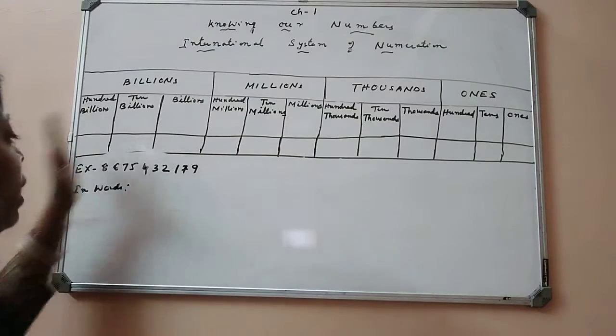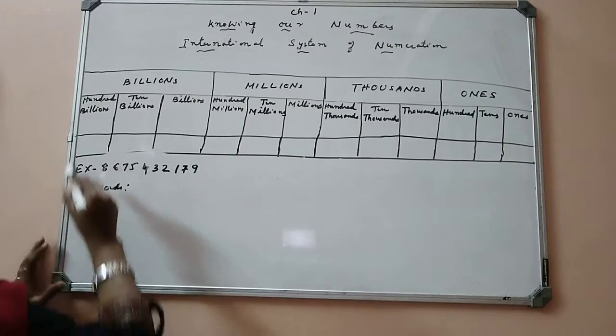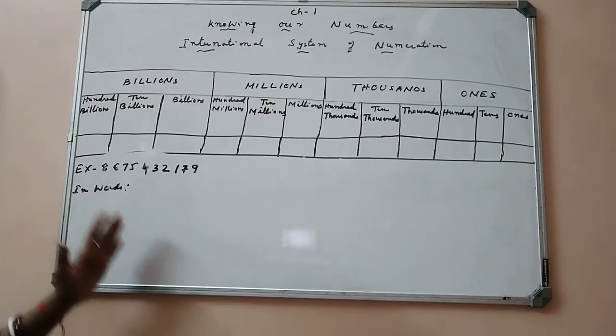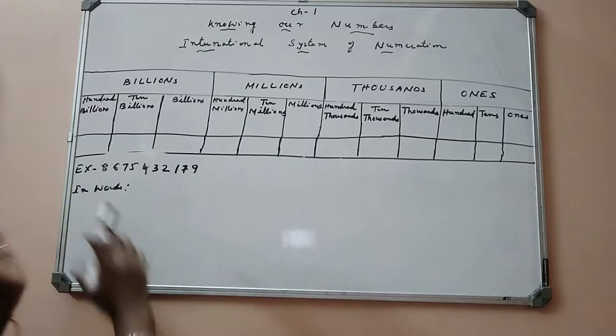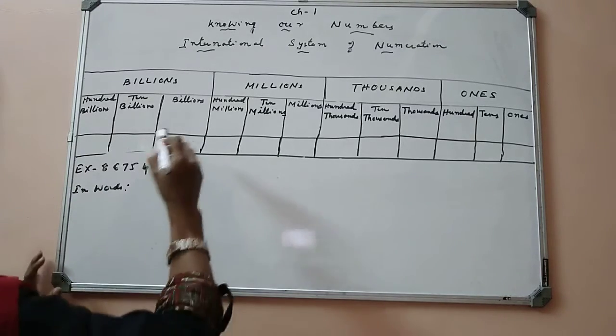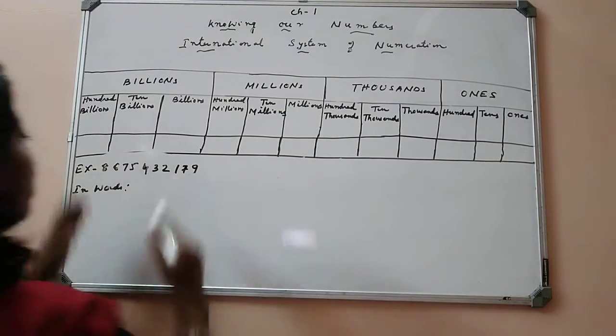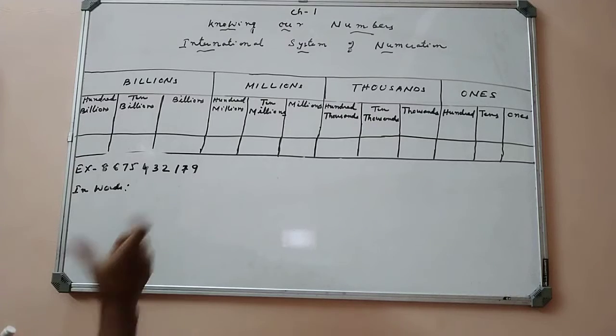Let us understand this through an example. I have taken here a ten digit number. Let us learn how to read these numbers and how to write these numbers according to the international system of numeration. When we get a large number, let us first segregate these numbers according to our periods.